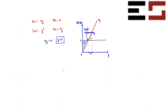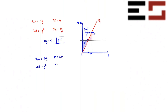Now let's find the supply function. Replace the fixed price four with a general price p, so revenue is p·y. The marginal revenue is p and the marginal cost is 2y.